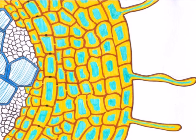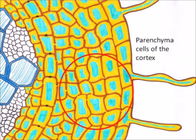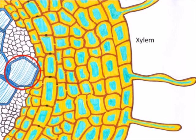This video is about water movement through a root, considering all the cell types that are involved. Pointing out the obvious structures that we need to know about: first of all, we've got the root hair cell on the outside, which provides contact with the water in the soil. We've then got the parenchyma cells, the cortex of the root. Then we've got the endodermis, which is critically important. And then beyond that, the xylem, which will transfer the water up the stem.